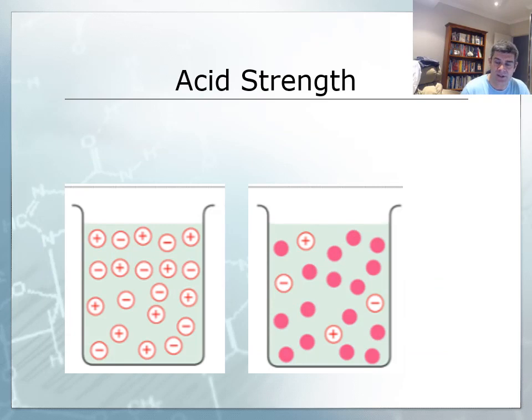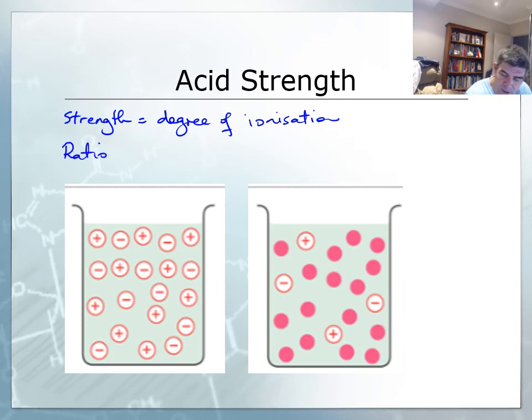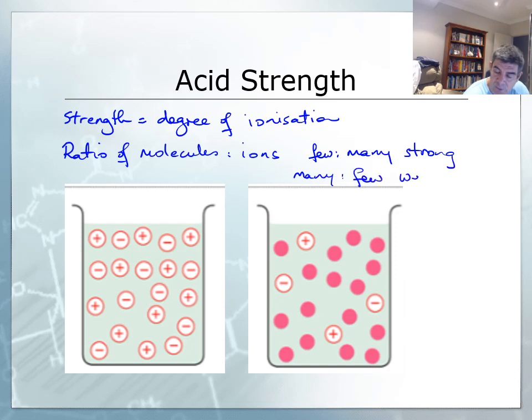So the first thing we need to do is look at acid strength. So strength is equivalent to the degree of ionization. If you like to look at it a different way, it's the ratio of molecules to ions. And therefore, if we think about it as the ratio of molecules to ions, then if the ratio of molecules to ions is low, so few to many, then we have a strong solution. If it is many to few, then we have a weak solution. So let's look at the two diagrams from the previous slide blown up a little to help us.